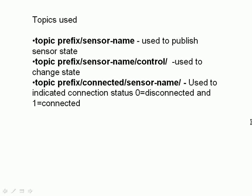The topics used are based on a topic prefix and sensor name. The topic "prefix/sensor-name/control" is used to send control commands to the sensor. The topic "prefix/connected/sensor-name" indicates connection status: zero means disconnected and one means connected. When the sensor is active it publishes one to that topic, and before it disconnects it publishes zero. You can monitor that topic to find out whether the sensor is active or not.